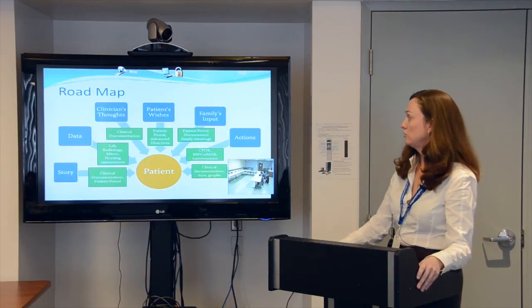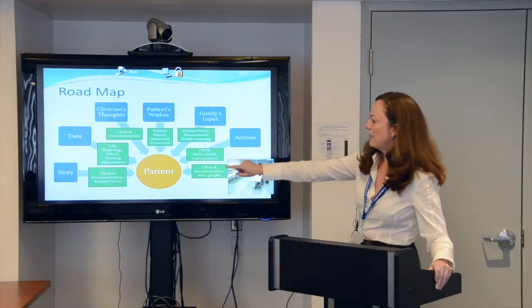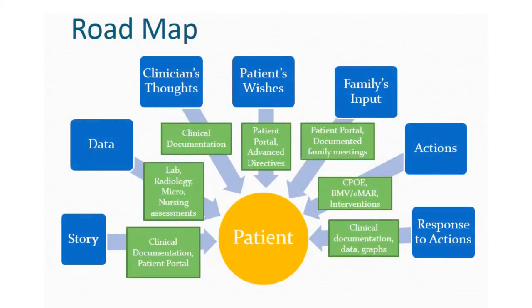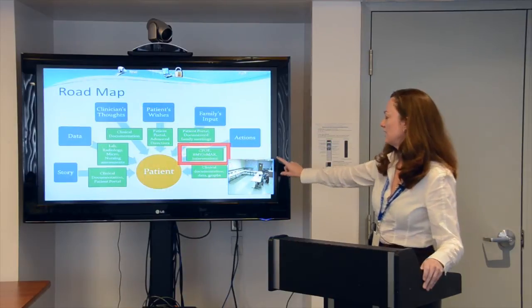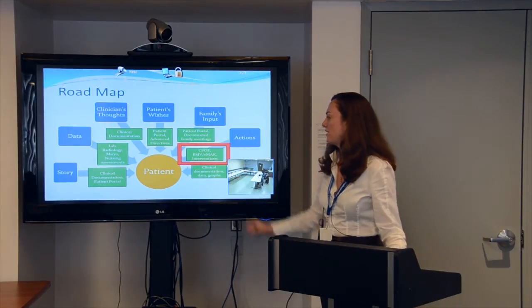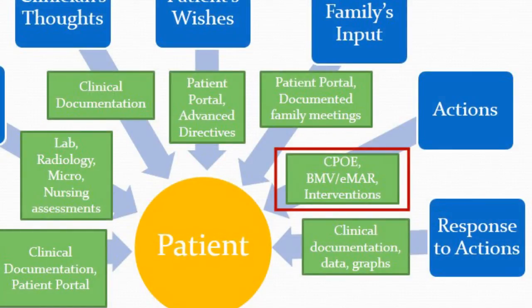So how do we accomplish that? Here is a road map that I refer to commonly. We put the patient at the center, where I believe they belong. The blue tiles around the outside represent the things that are important to the patient, and the green tiles represent the parts of the electronic health record where we're capturing those things. Today we're focusing on actions and how we record them — specifically computerized provider order entry and BMV EMAR with nursing interventions.